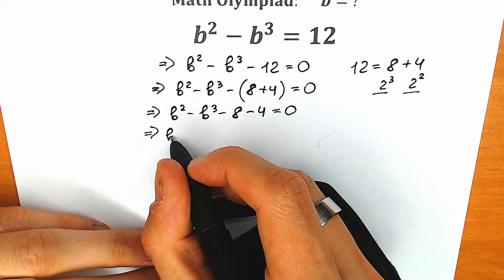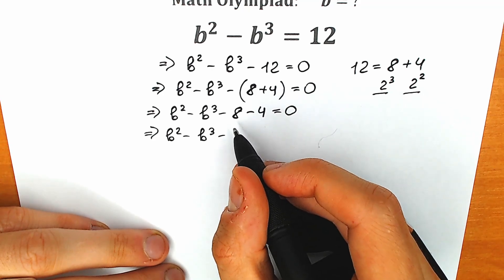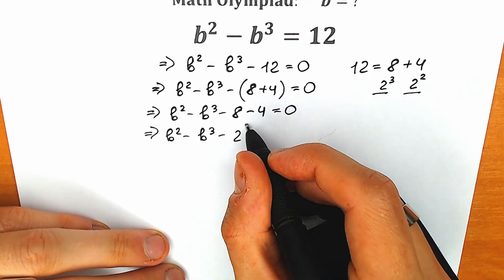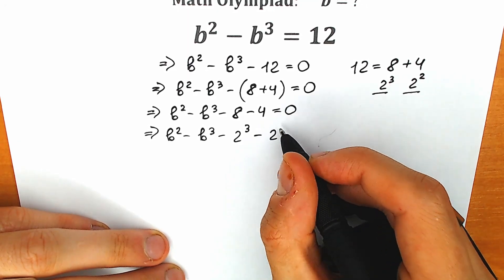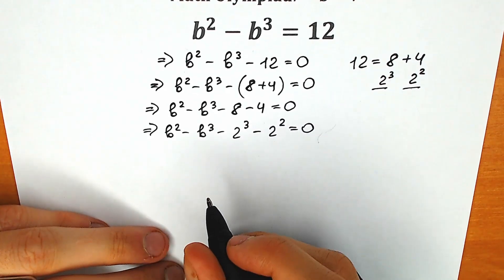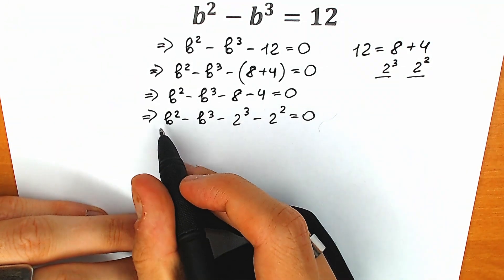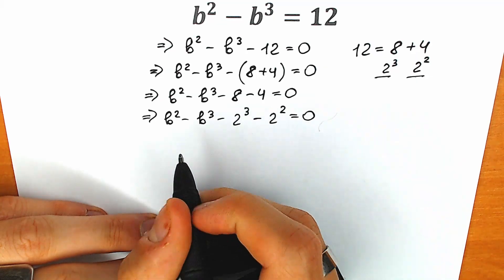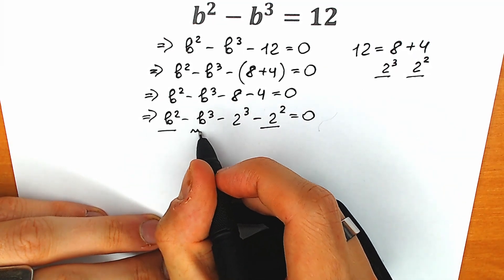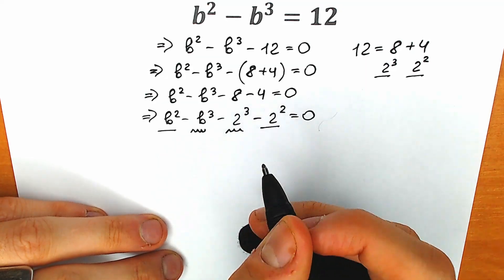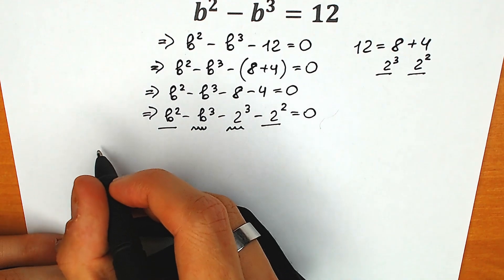Let's do it. So we have b² - b³, minus 2³, minus 2², equal to 0. We have four expressions: two variables (b² and b³) and two constants (2³ and 2²). Let's group them — we can group b² with 2², and b³ with 2³. Let's try to combine and group it.